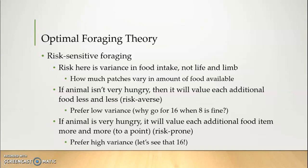That's about all we're going to cover on optimal foraging theory explicitly. It does underlie pretty much everything in this chapter and quite a few other chapters as well. You could apply a lot of optimal foraging theory to things like looking for mates — if an individual has already passed down many of their genes, they may not want to go for the jackpot of having as many babies as possible, but just as many as they can afford.